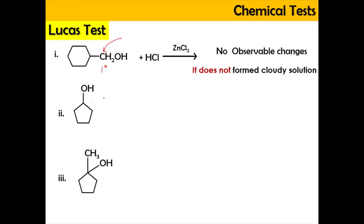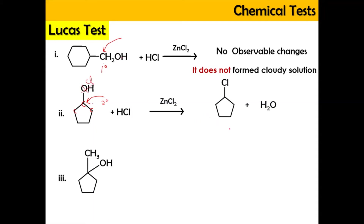For the next carbon, attached to two carbon atoms, it is a secondary alcohol. When a secondary alcohol is tested under the Lucas test — reacting with HCl in the presence of zinc chloride — OH is replaced by Cl to give alkyl chloride, and water is produced as a by-product. Because it is a secondary alcohol, the time taken to turn cloudy will be roughly five minutes.